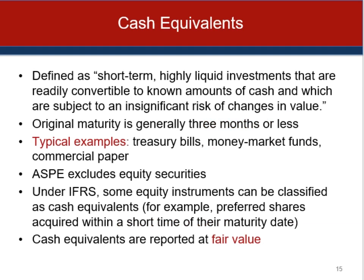Cash equivalents are short-term, highly liquid investments that are both readily convertible to known amounts of cash and so near their maturity that they represent an insignificant risk of change in interest rates. For example, a 30-day treasury bill would be a government bond with a very short-term maturity date, short-term commercial paper — basically an IOU written to a company for overnight borrowing — and money market funds, which are mutual funds made up of investments in government securities and short-term treasury bills.